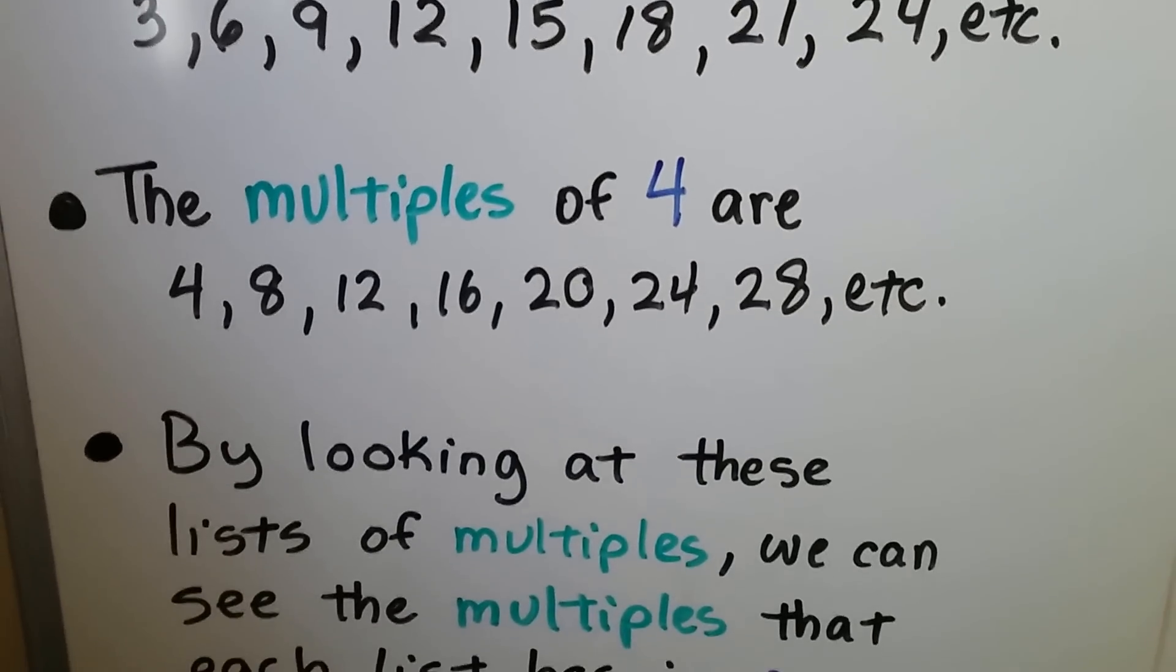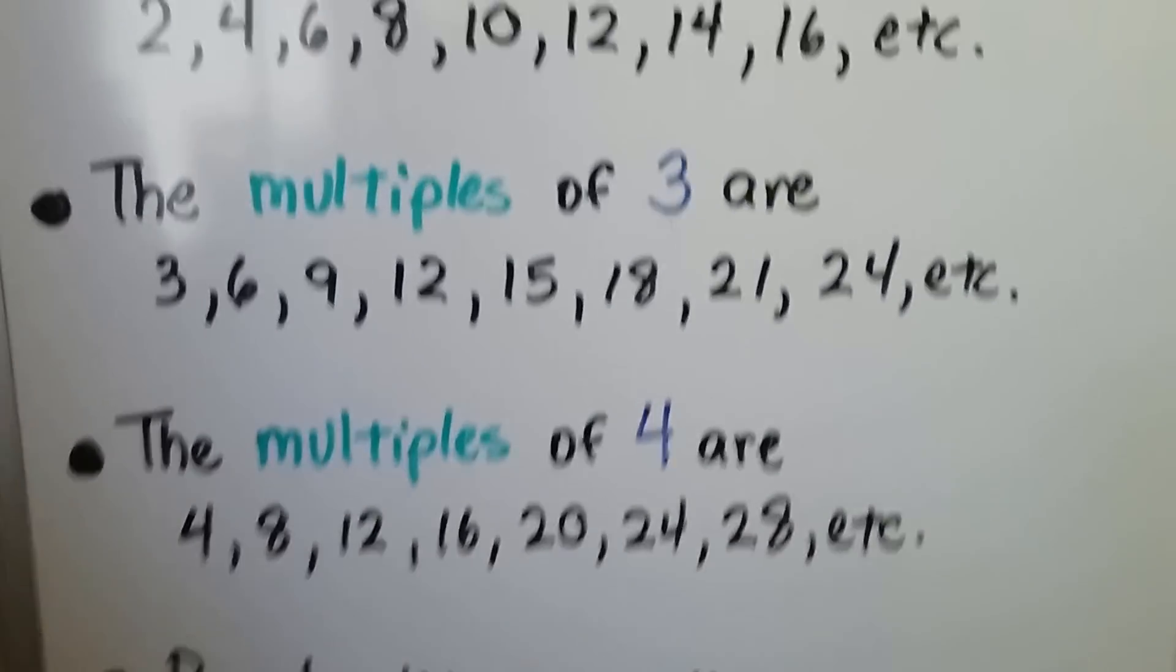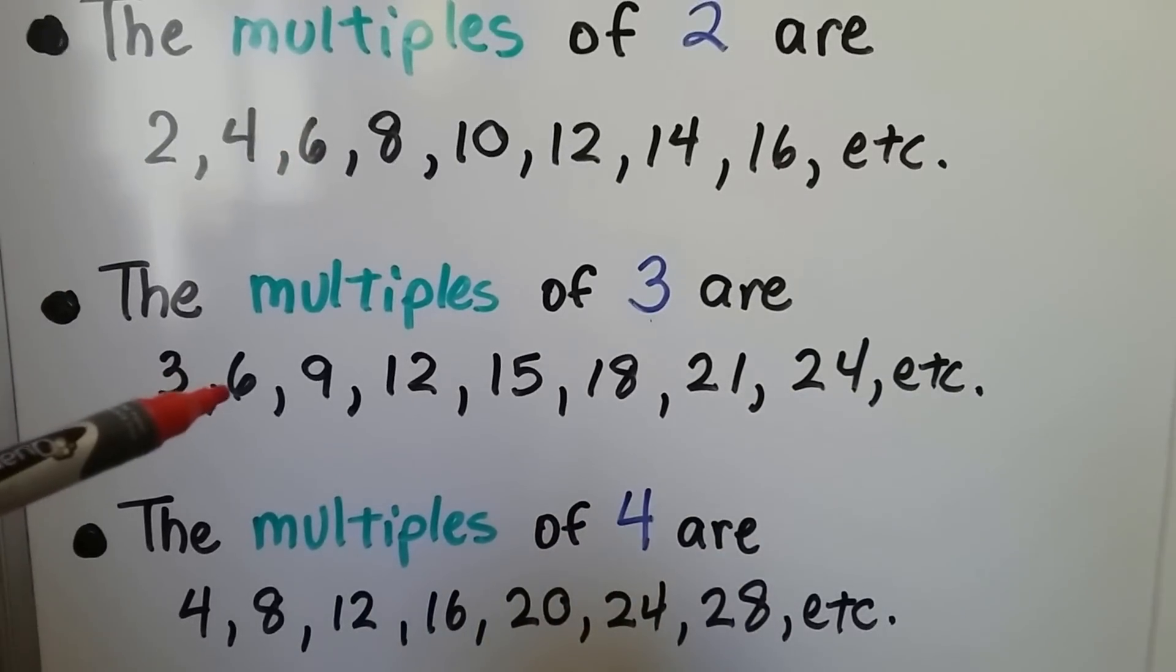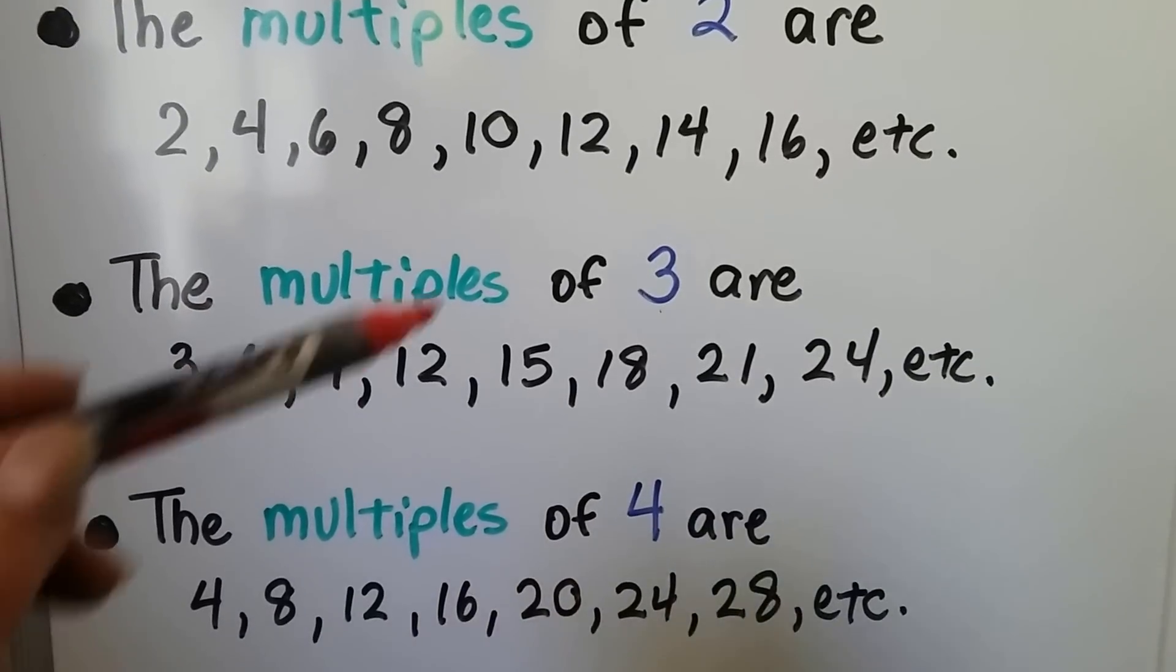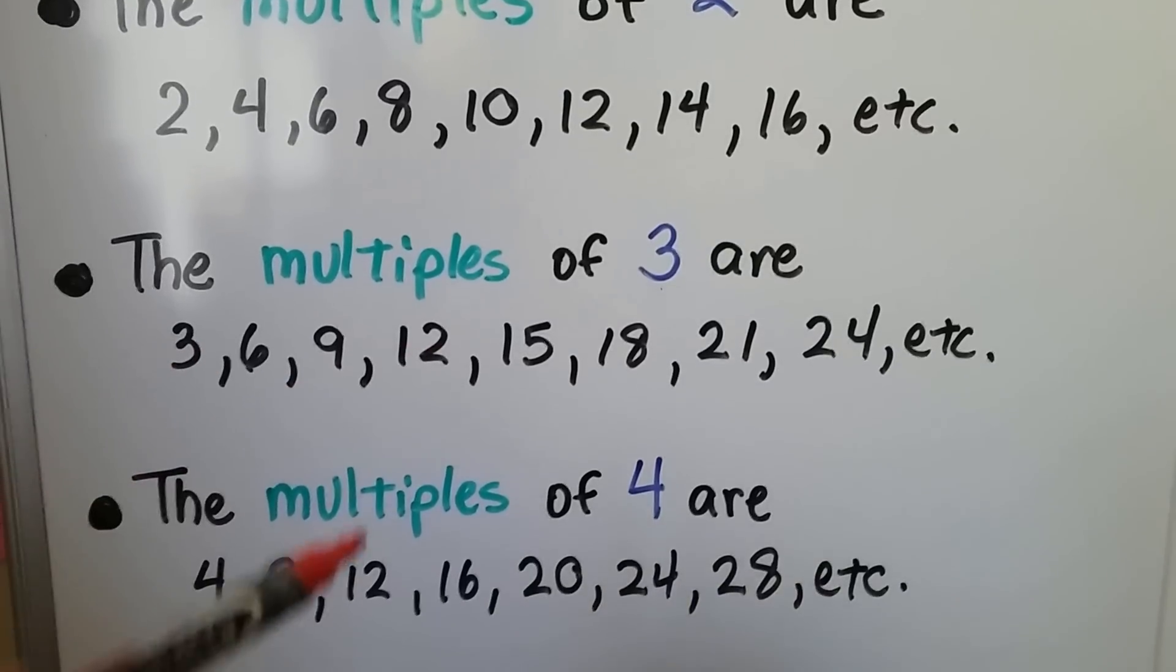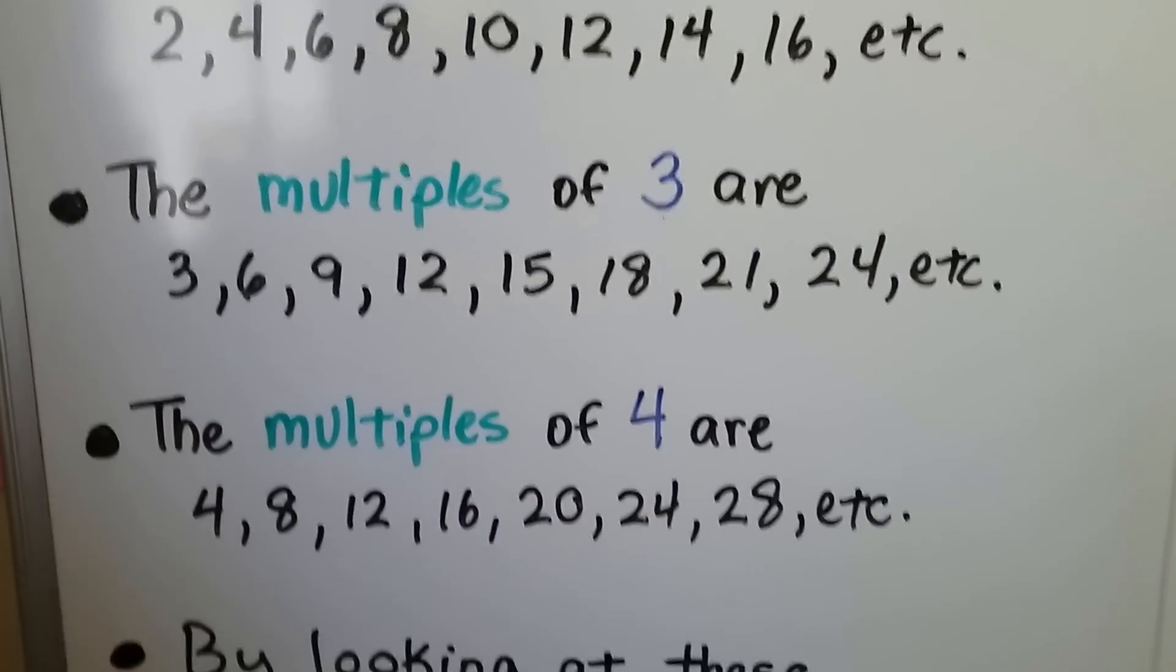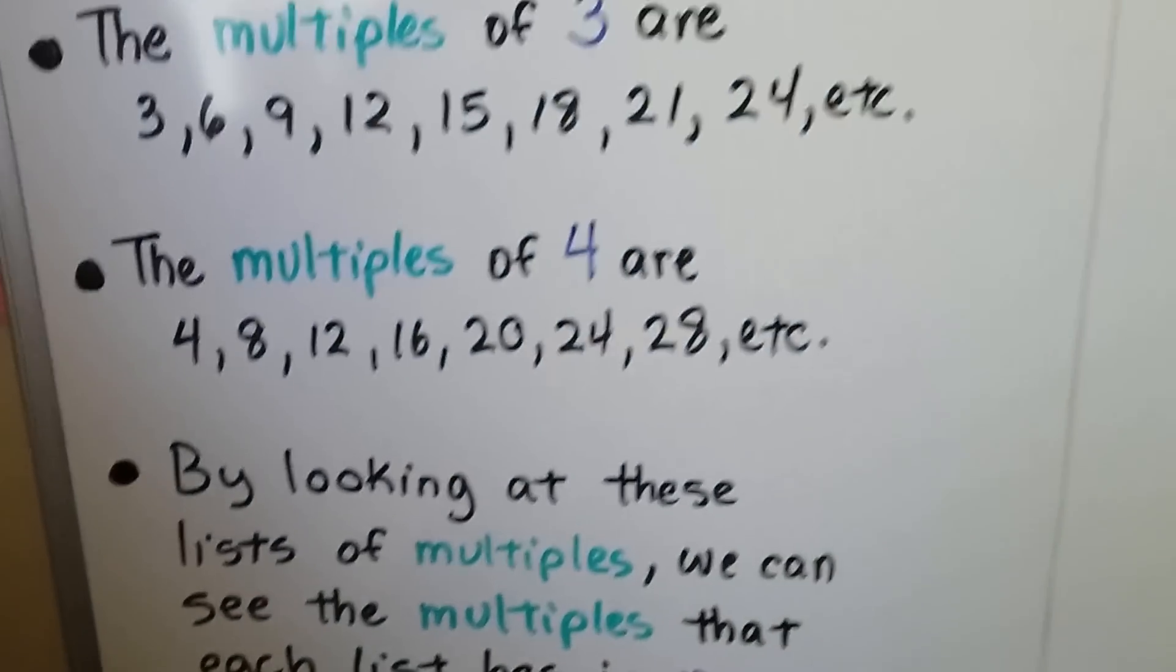And by looking at these lists of multiples, we can see the multiples that each list has in common. So if we looked at these lists, do you see any numbers they have in common? The multiples of 2 and the multiples of 3 both have a 6, and they both have a 12. And the multiples of 3 and the multiples of 4 have a 12 in common. Those are common multiples. And they both have a 24 in common. We can find their common multiples by making a list of their multiples.